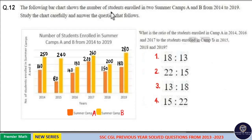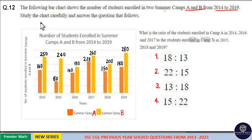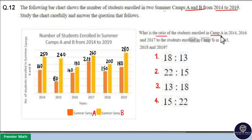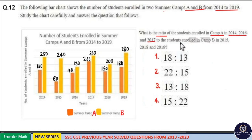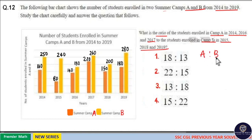The following bar chart shows the number of students enrolled in two summer camps, A and B, from 2014 to 2019. Study the chart carefully and answer the question: what is the ratio of students enrolled in camp A in 2014, 2016, and 2017 to the students enrolled in camp B in 2015, 2018, and 2019?